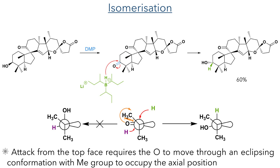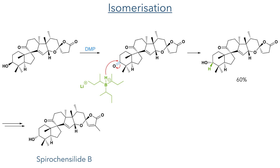If you would like to learn more about conformational analysis, hit the link above for my ultimate guide where I go through this topic in detail. With the stereochemistry of this hydroxyl group now inverted, they could follow the same steps as before to complete the synthesis of spirochinenside B.